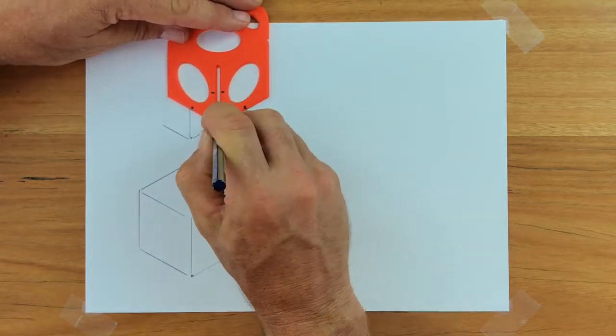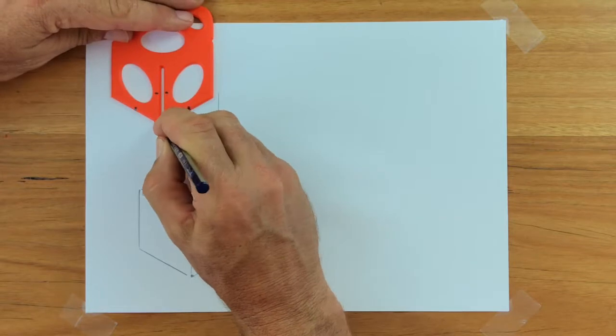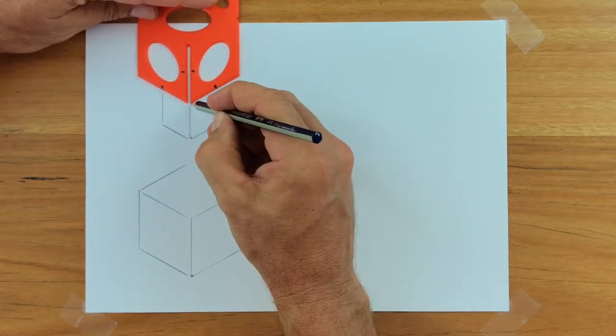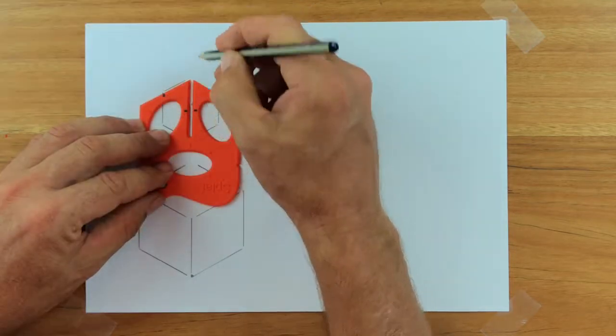Now I'm using the center splat for the up lines. That's step one, just like before. Now it's step two, flip for step three.